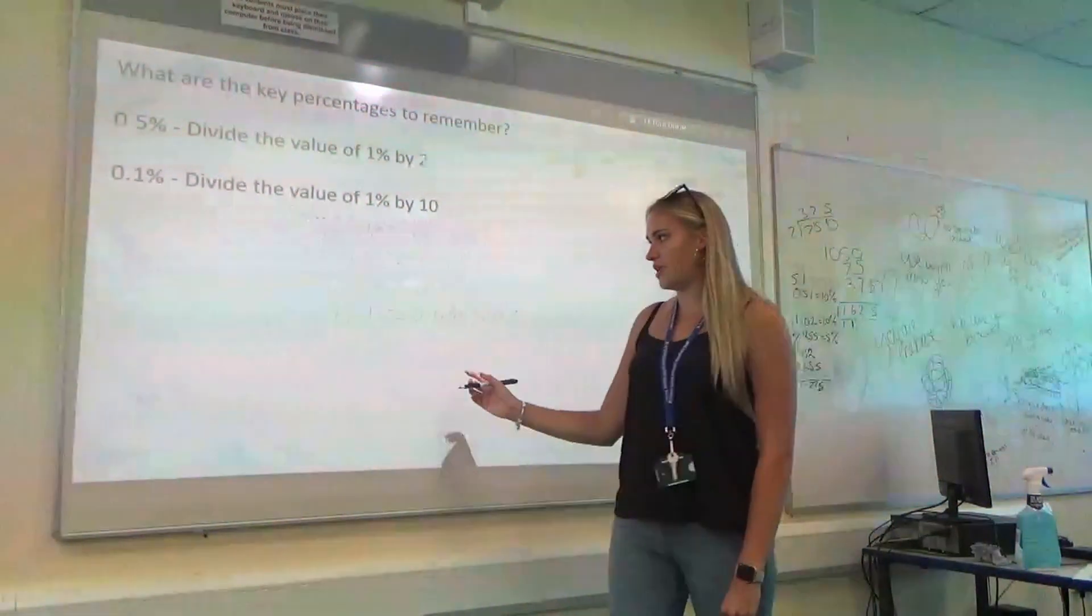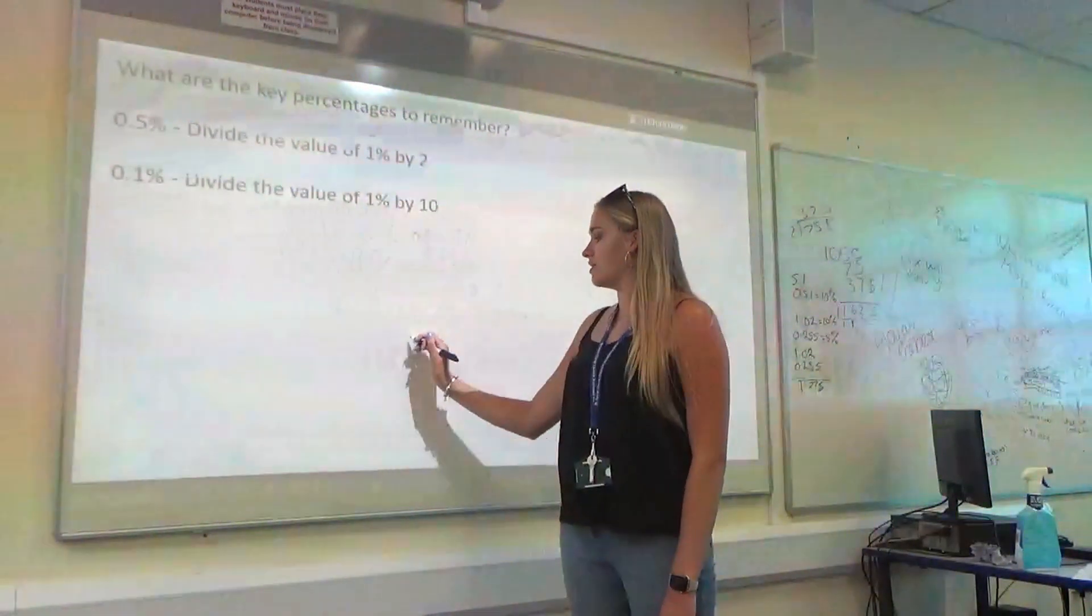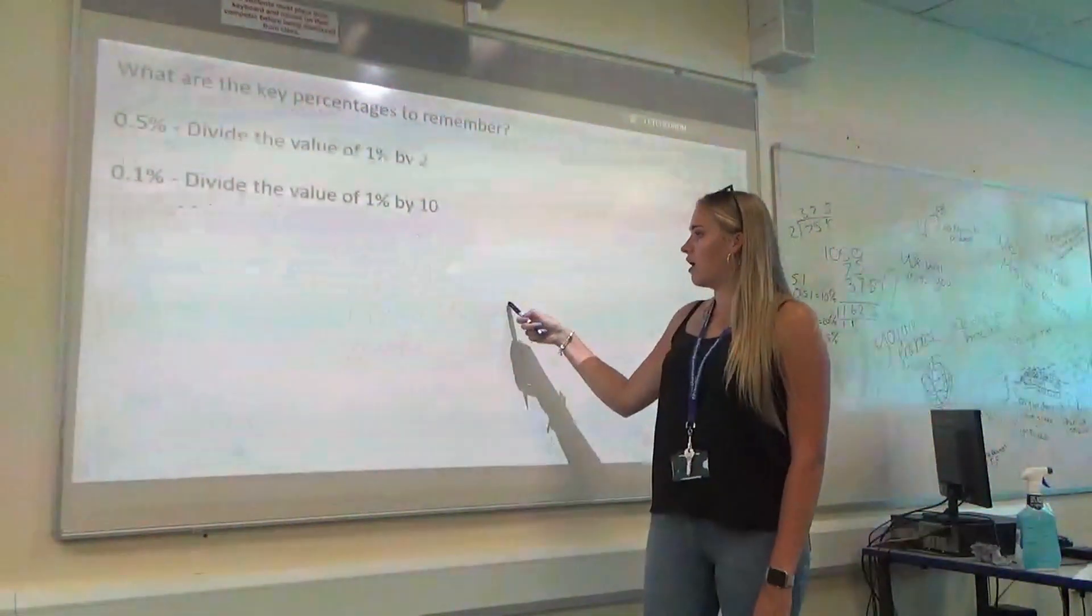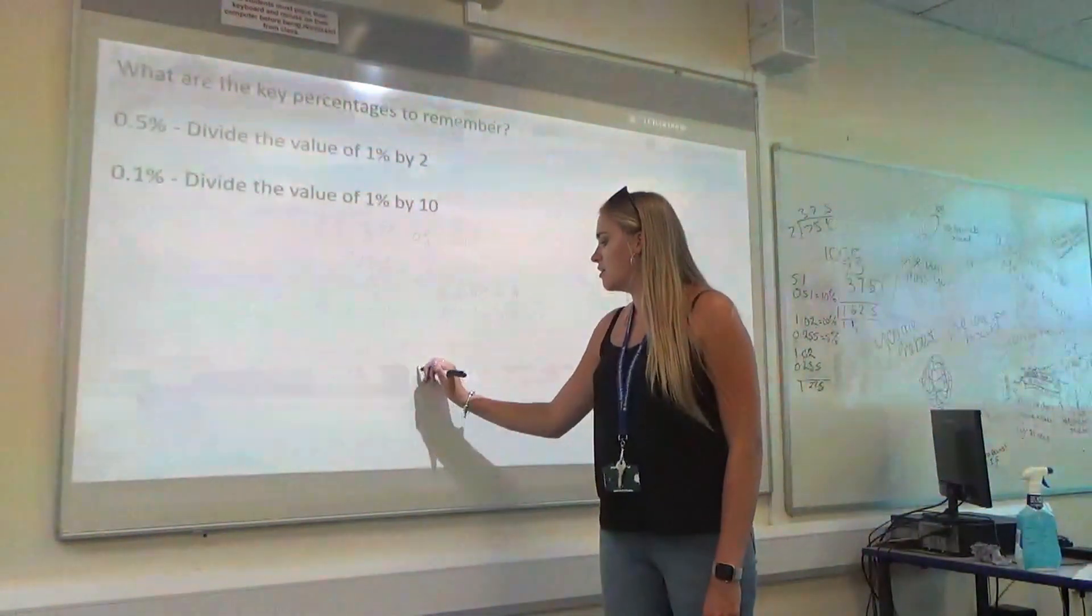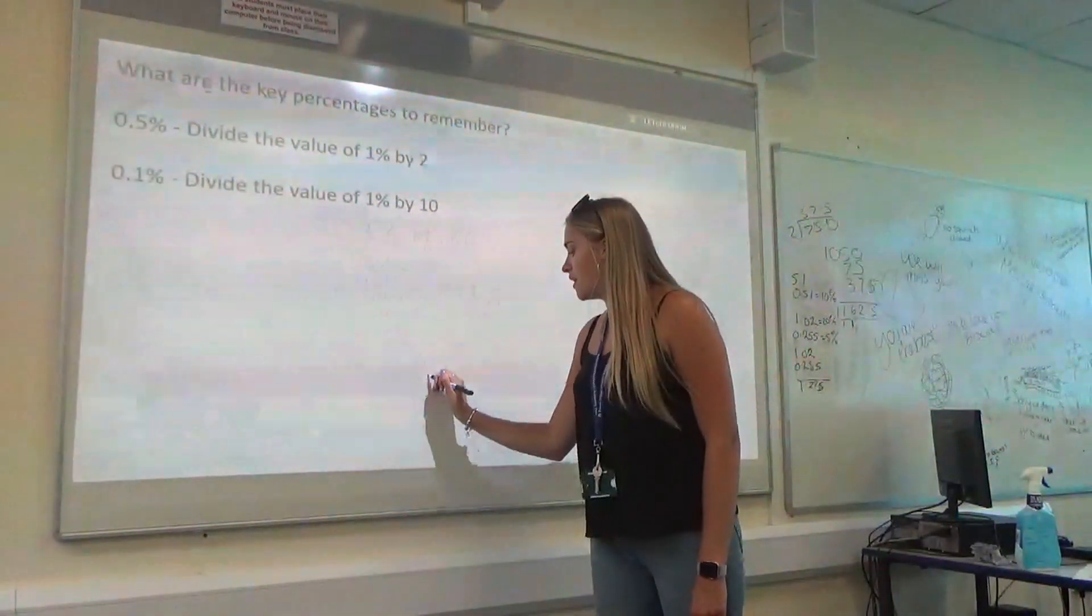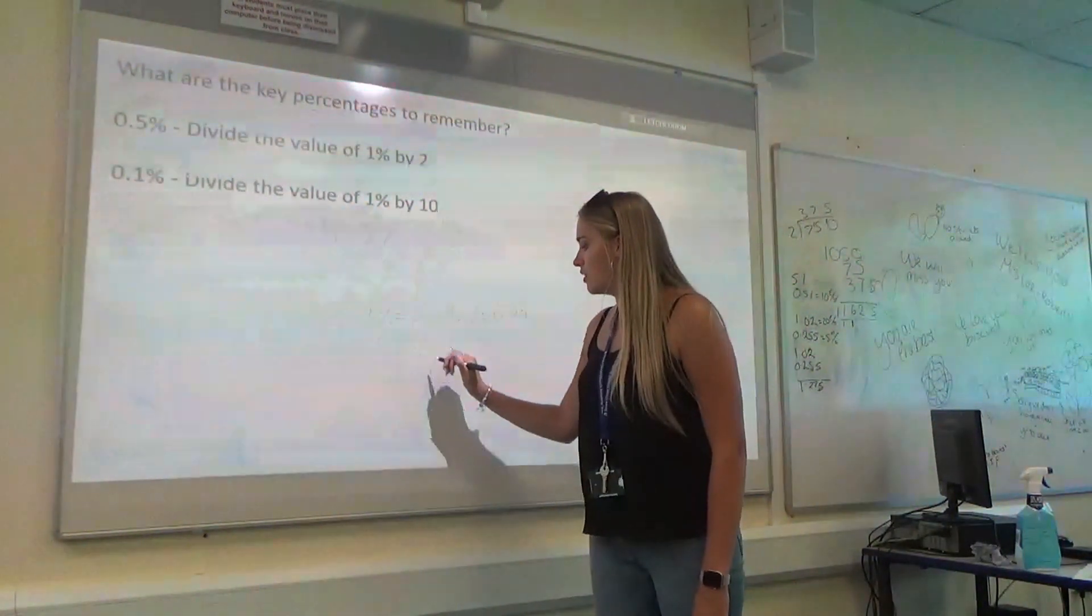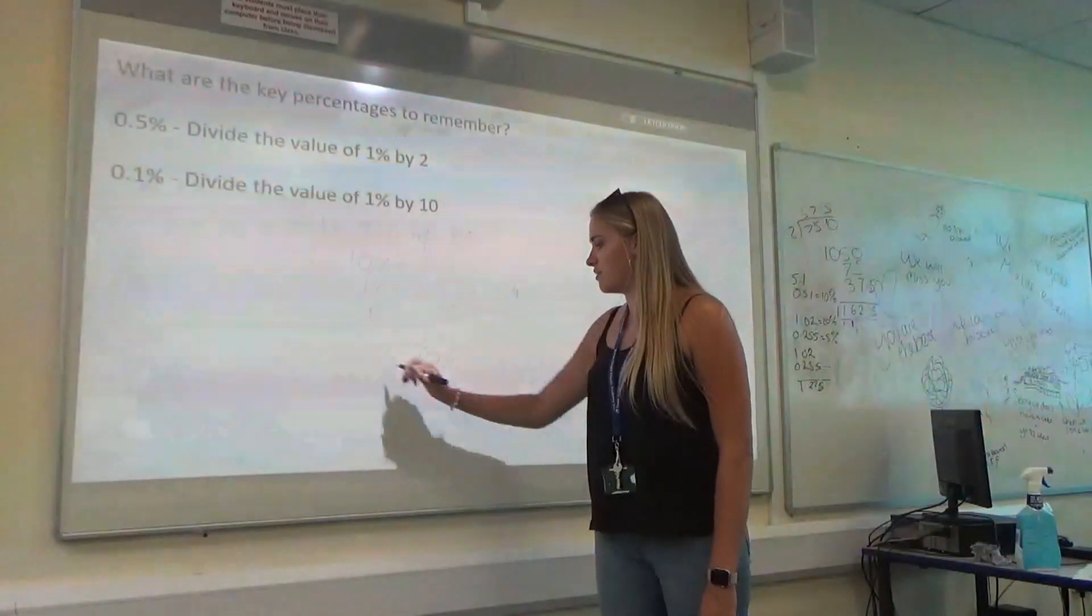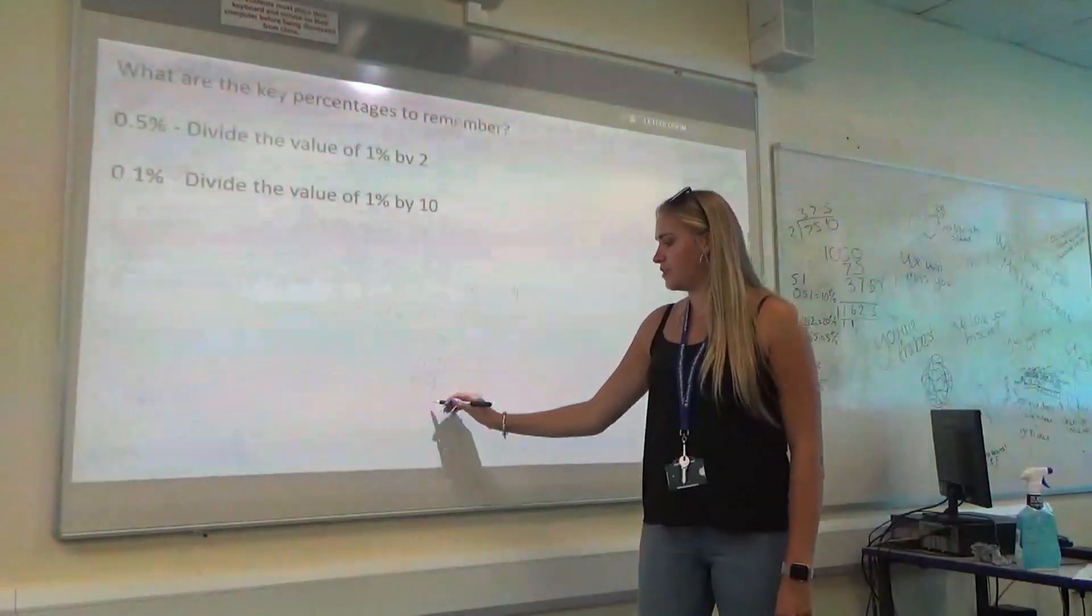Once you've done this, all you need to do now is add them together. So, we've got our 10. We've got our 8%. And then we've got our 0.3%. Once they are all lined up, fill in your 0s and add down. You're going to get 4.